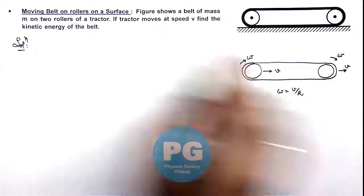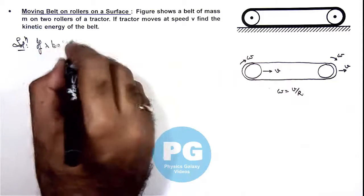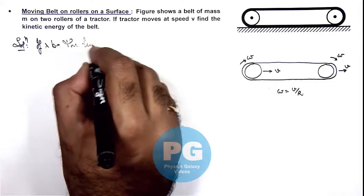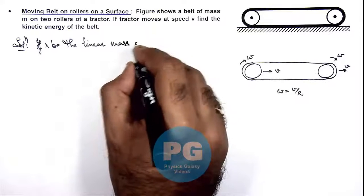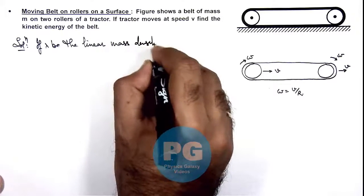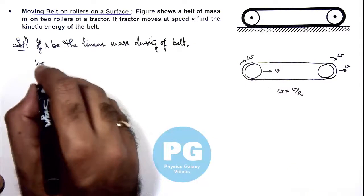So in this situation, one thing we can write: if lambda be the linear mass density of the belt, here we use...